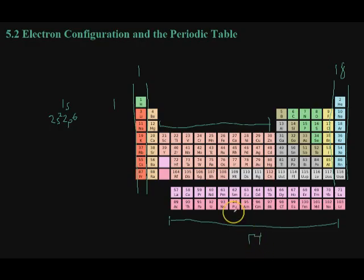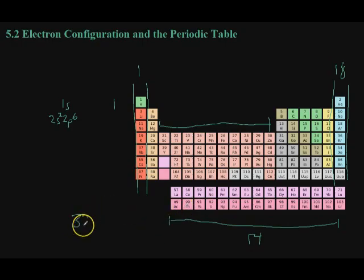That period, with all its sub-levels included, can hold up to 32 electron arrangements, meaning 32 different elements.